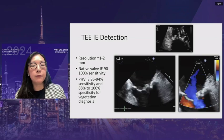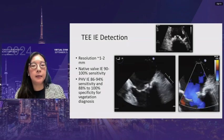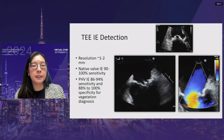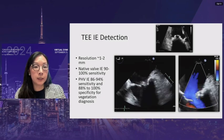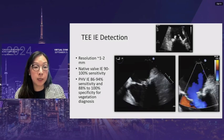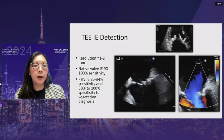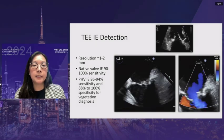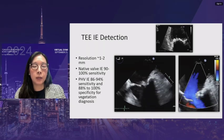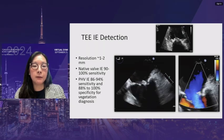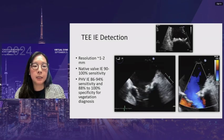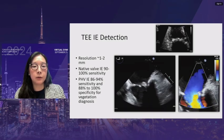The improved TEE resolution is reflected in increased sensitivity and specificity. For native valve infective endocarditis, the sensitivity for detecting a mass is about 90 to 100%. For prosthetic heart valves, sensitivity is between 86 to 94%, and specificity is between 88 to 100%.